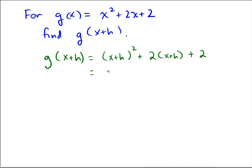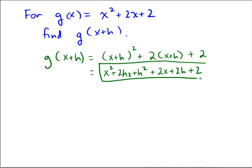So, distributive property here, x squared plus 2hx plus h squared. Distributive property here, 2x plus 2h, and then that lonely 2 on the end. And I don't see any real terms that we can combine, so we'll just leave it like that.